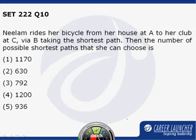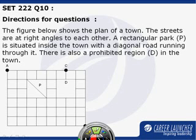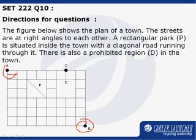We just go back to the previous slide and observe. The question is saying Neelam has to go from point A to point C via B.